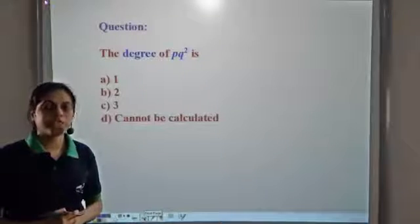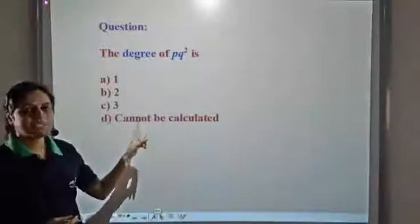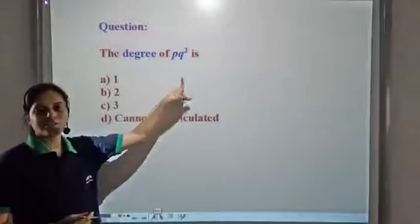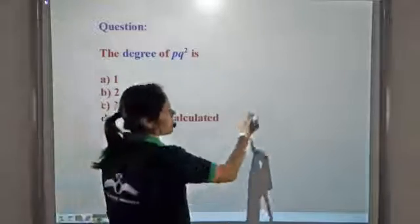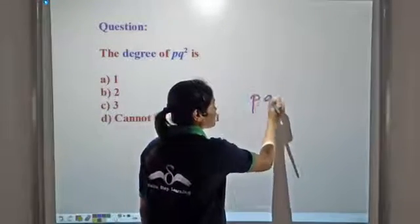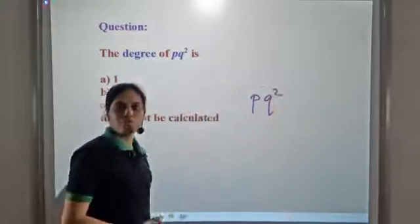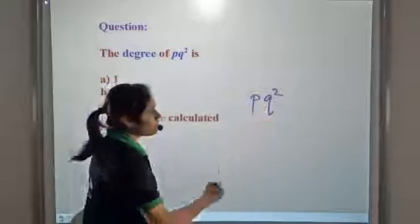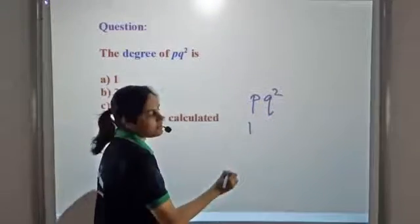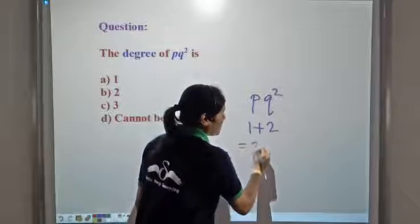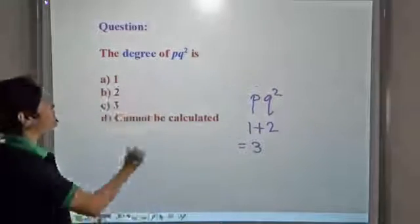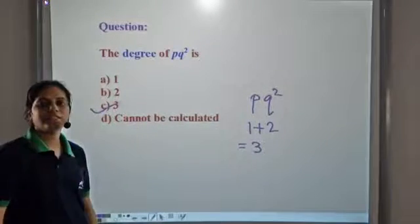Now what is the degree of pq square? We have seen that the degree of a term is the sum of the powers of the variables. So in pq square we have two variables, p and q. The power of p is 1. The power of q is 2. And their sum is 3. So the degree of this term is 3.